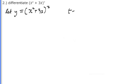We make t equal to what's in the brackets, x² + 3x. Then y in terms of t is equal to t^7.